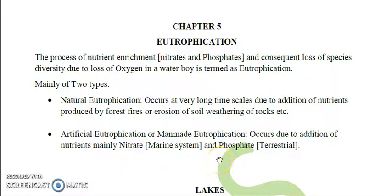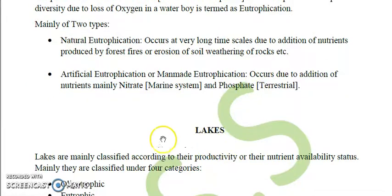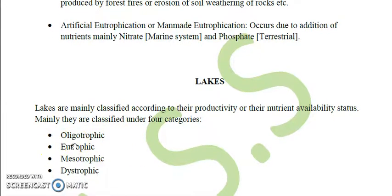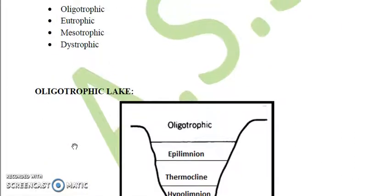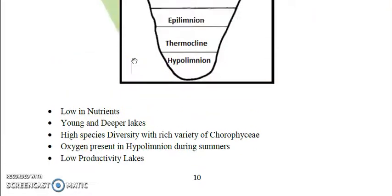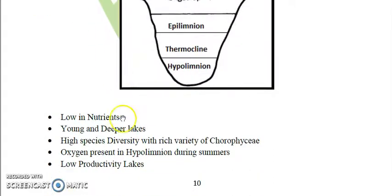Lakes can be classified according to their productivity or nutrient availability. The first type is the oligotrophic lake — these are lakes which are low in nutrients and low in productivity. They are considered young and deeper lakes.